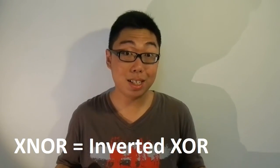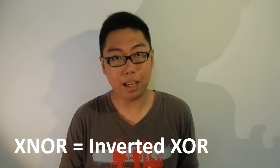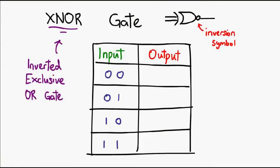Let us now move on to look at our last gate of the day — the XNOR gate. Using all the information I've given you in this episode, I'm pretty sure you can figure out what the XNOR gate is. It is simply an inversion of the XOR gate. So given the truth table of the XOR gate, we can easily construct the truth table of the XNOR gate by simply inverting all the contents of the last column.